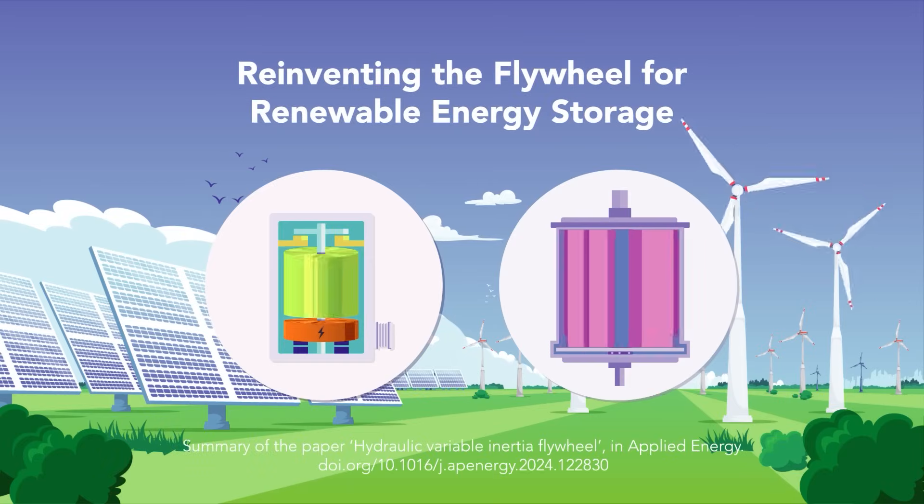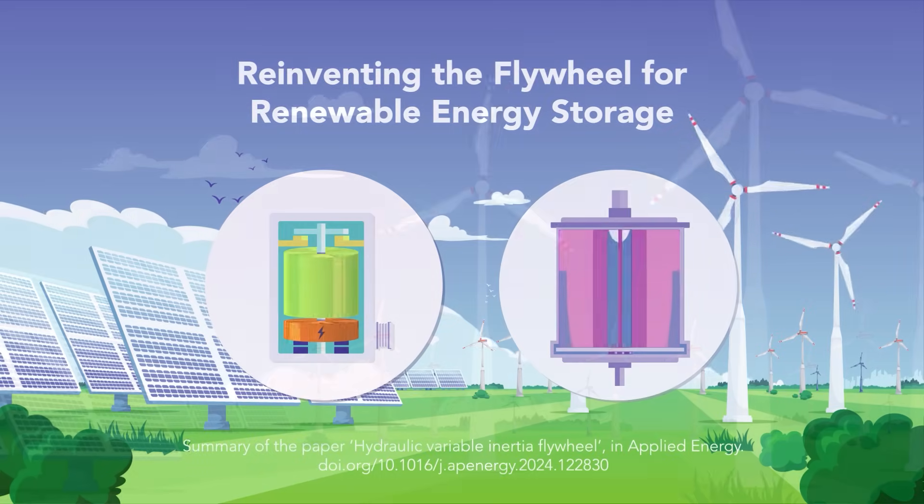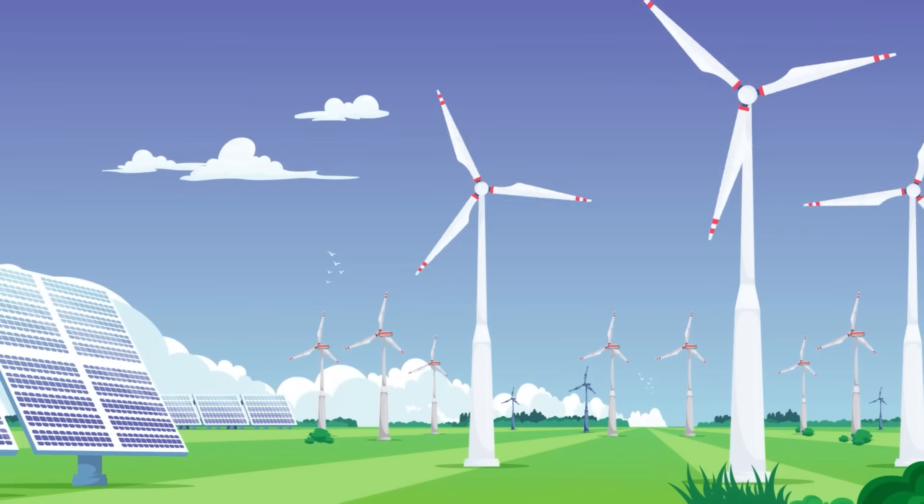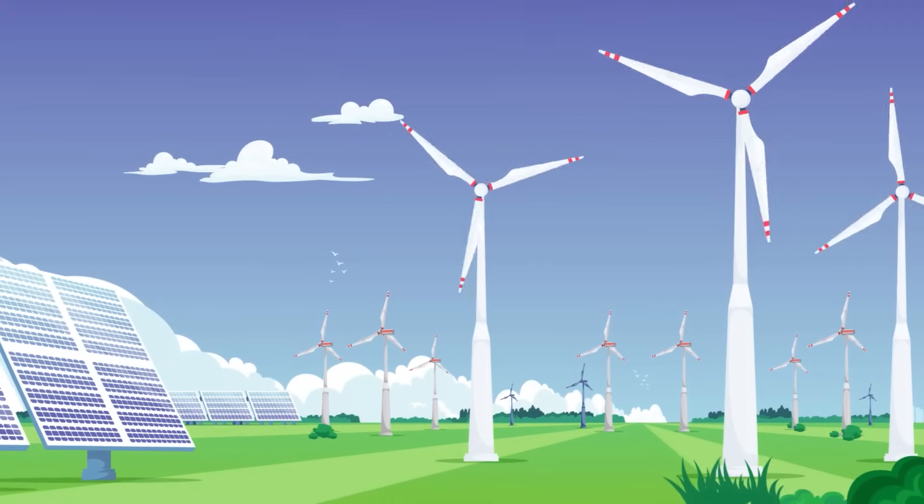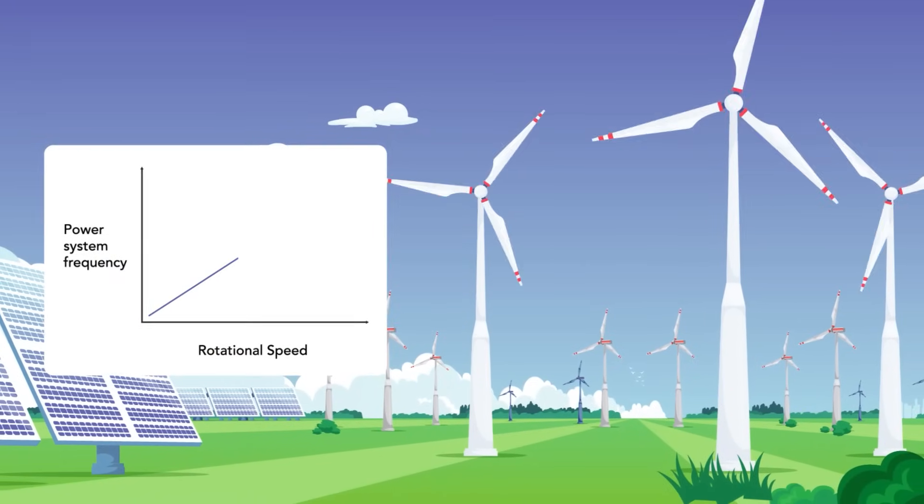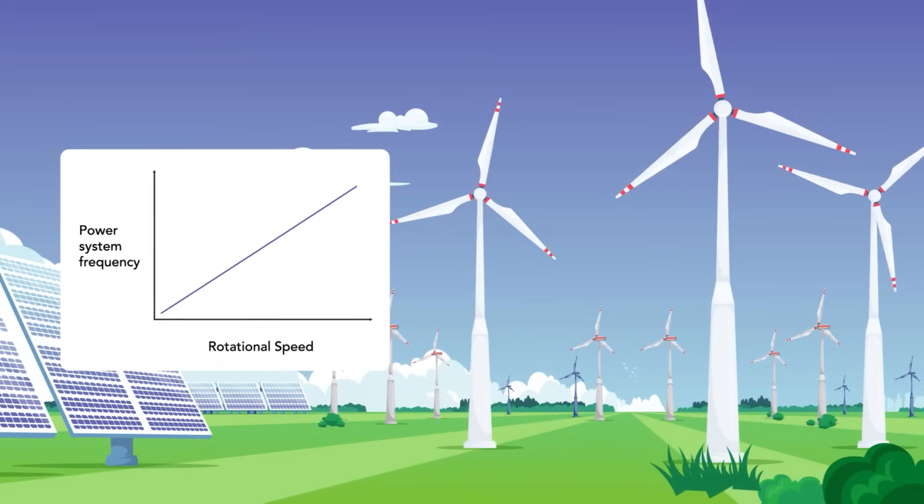Re-inventing the flywheel for renewable energy storage. Alternating current power systems rely on rotating electric machines, such as generators and motors, whose rotational speed forms the power system frequency.